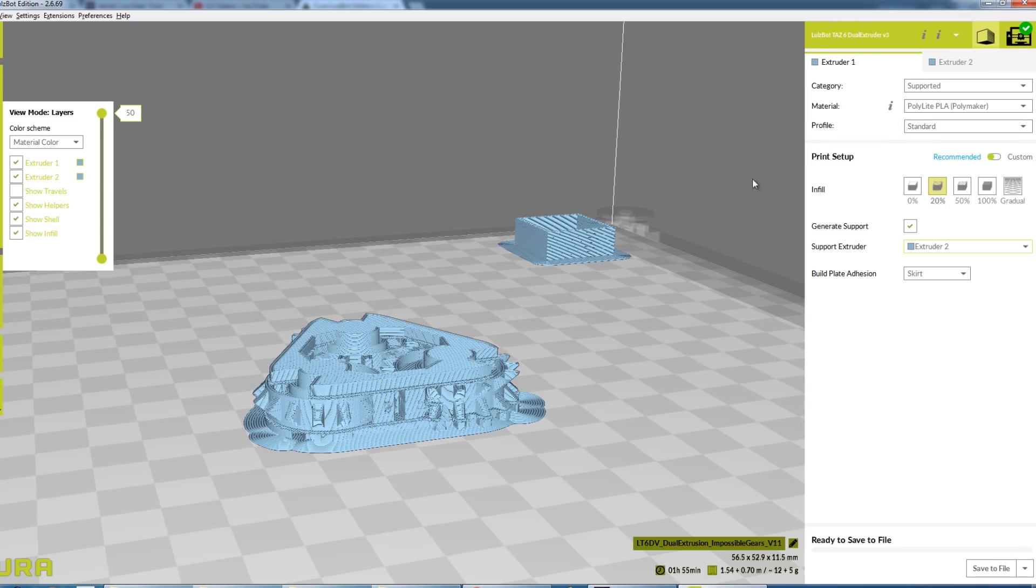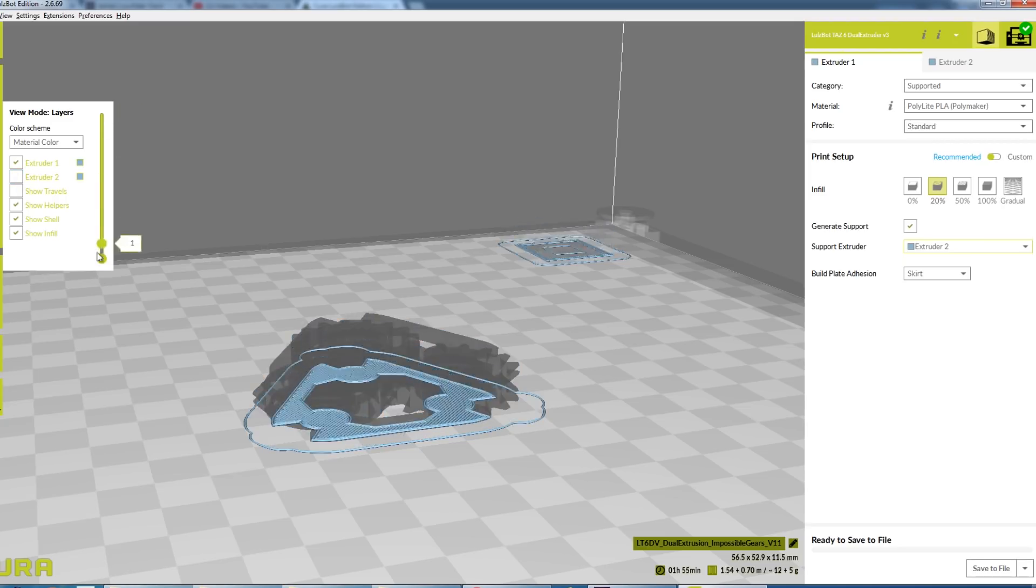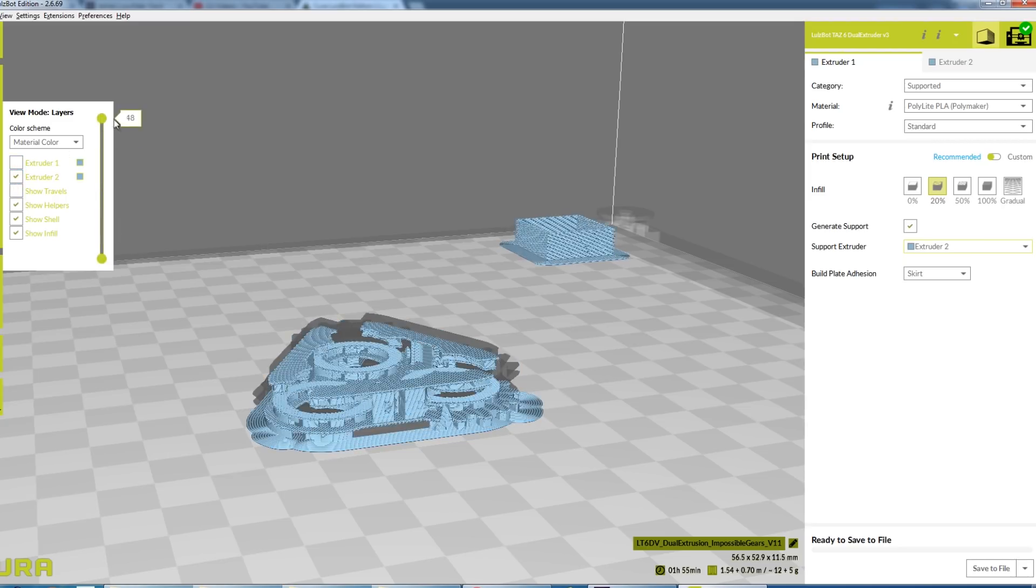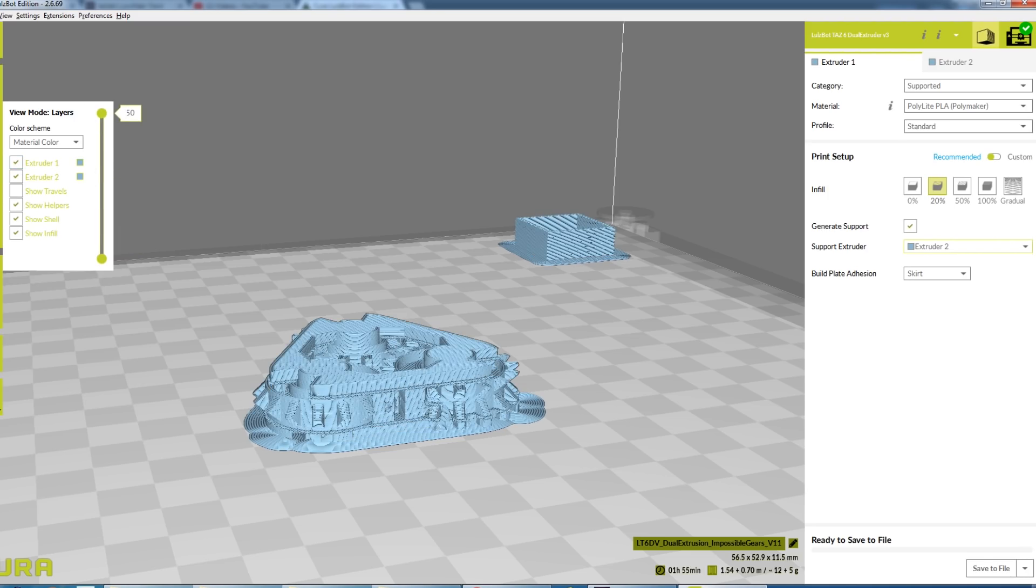So here we've got two extruders for this printer, extruder one and extruder two, and we've set support material on extruder two, and I've set that material to polydissolve, which is presumably the stuff that comes with the printer. So we've got this thing here to show the layers of the print, and we can actually see what's printed with extruder one, and we can see that that's the main thing, and extruder two should only be the support material, so that looks pretty good. So let's export our G-code, and we'll go and put that on the printer.